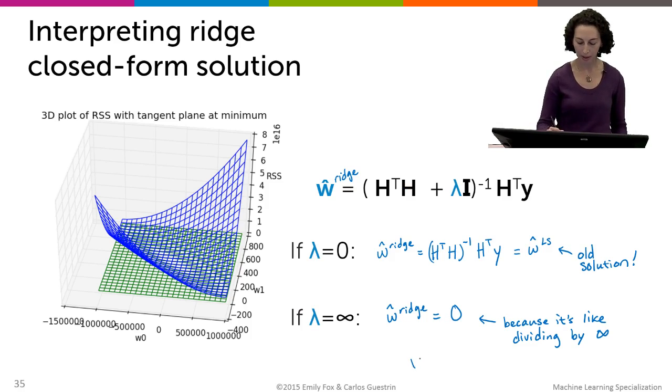Okay, so this is a little sanity check that when lambda is equal to zero, this solution, this closed form solution we have is exactly equal to our least square solution. That's what we had discussed at the very beginning of this module. And likewise, when we crank lambda all the way up to infinity, our solution is equal to zero. But now what we have is we have a closed form for what the solution is for some lambda in between zero and infinity.